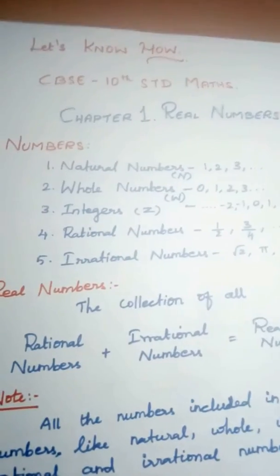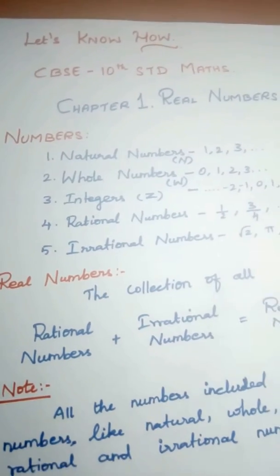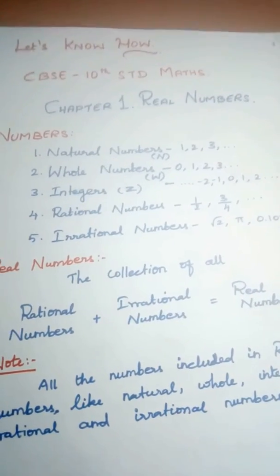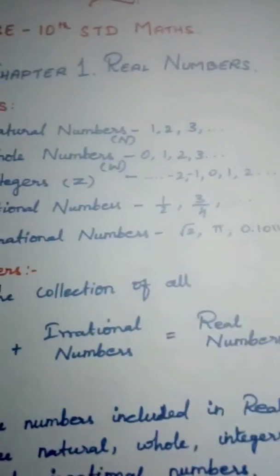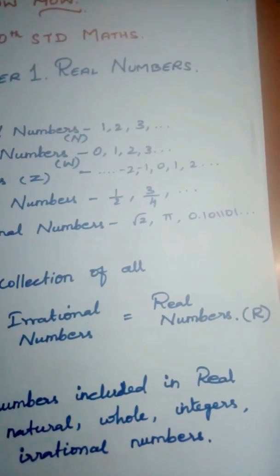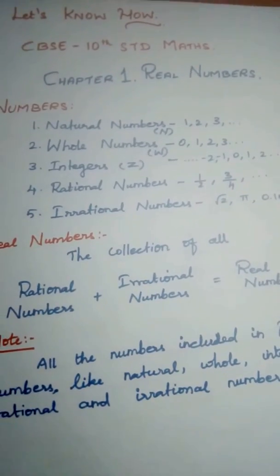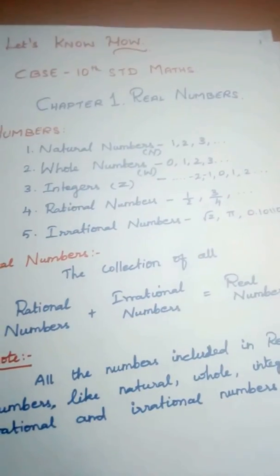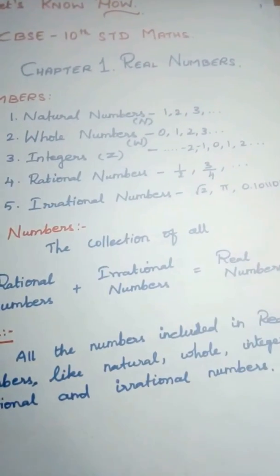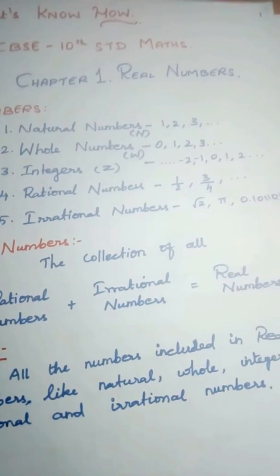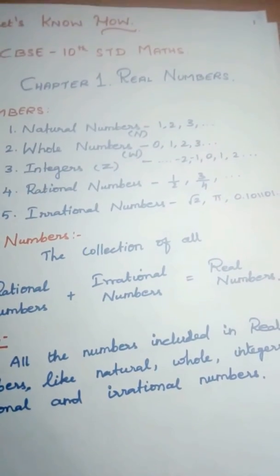Now let's come to real numbers. A real number is a combination — or the collection — of rational and irrational numbers. Real numbers are denoted by capital R. That means it's not only rational numbers or only irrational numbers; all numbers — natural, whole, integer, rational, irrational — all of them together become real numbers.